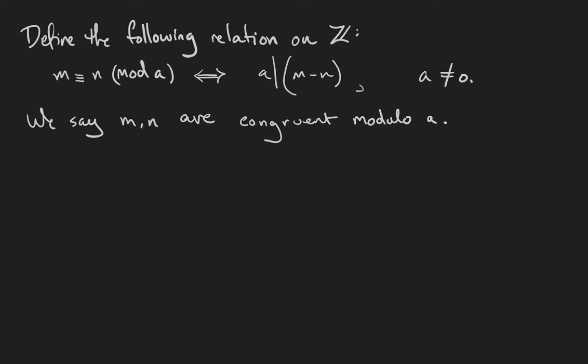Here are a couple of examples. 5 is congruent to 17 mod 4 because 17 minus 5 is 12, and 12 is divisible by 4. However, 3 is not congruent to 22 mod 8 because 22 minus 3 is 19, and 8 does not divide 19.